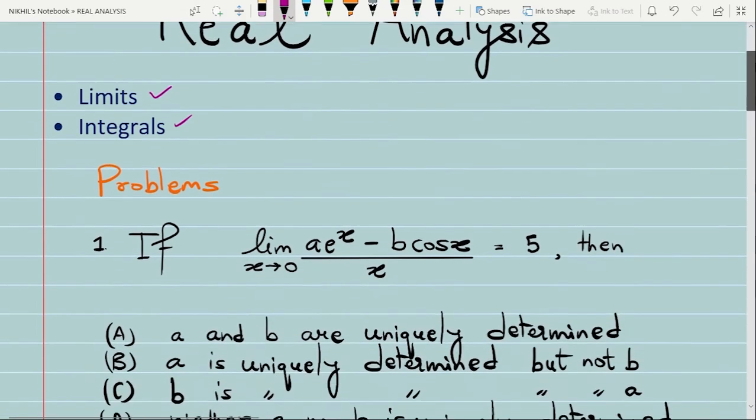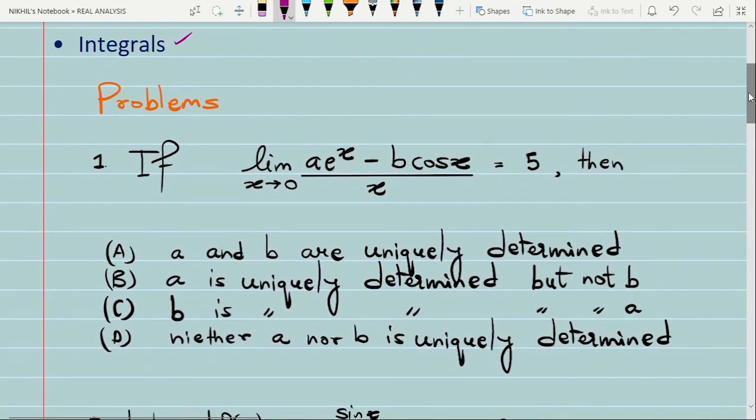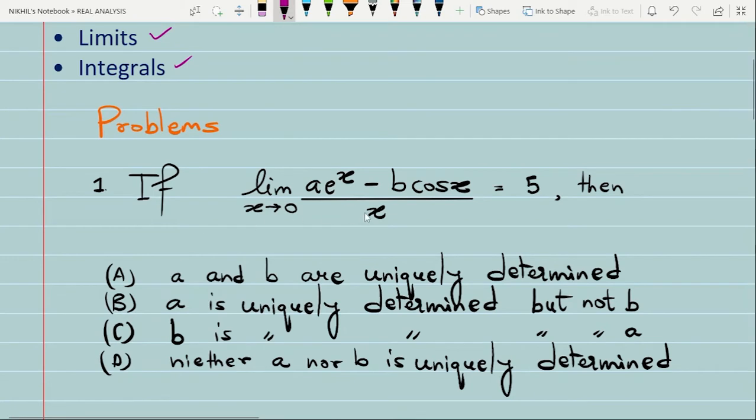Let's first see your first problem of the day. Suppose you are given this expression: ae^x minus b cos x divided by x. Now, if you take the limit when x tends towards 0, then the limit of this quantity comes out to be 5. That is given to you. Now, there are further four options in which you have to verify which of the following is true by simply calculating or evaluating the values of a and b.